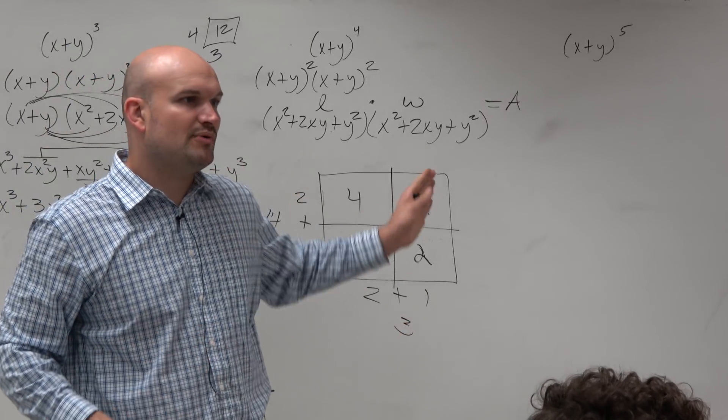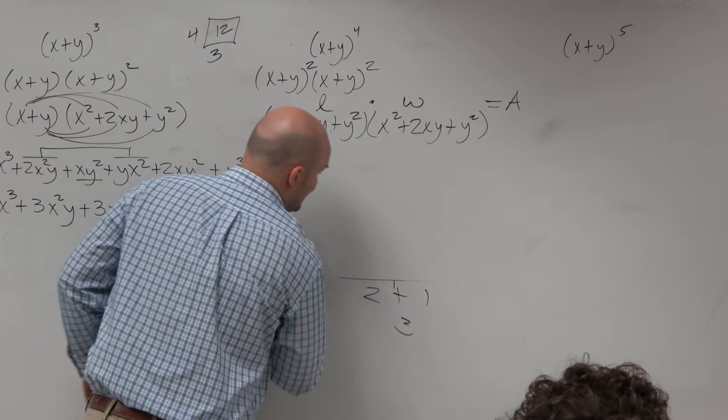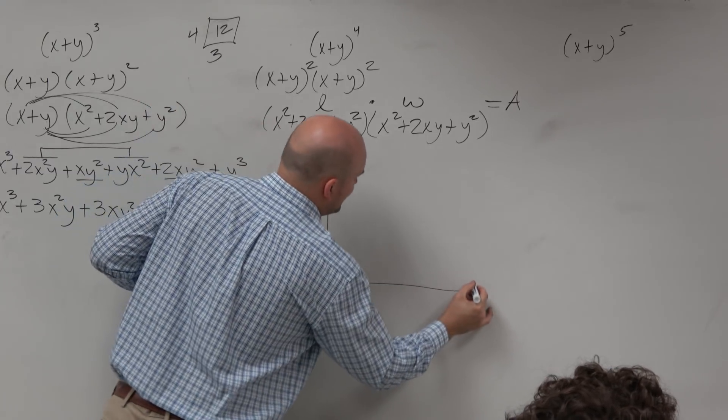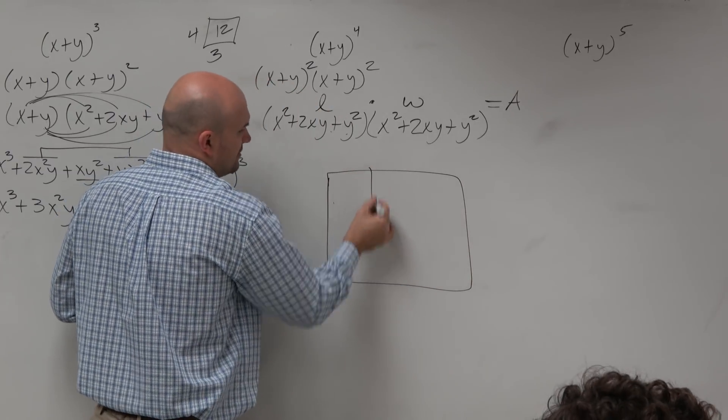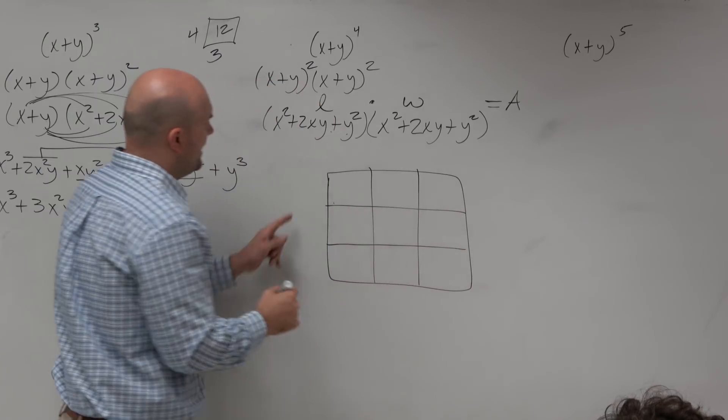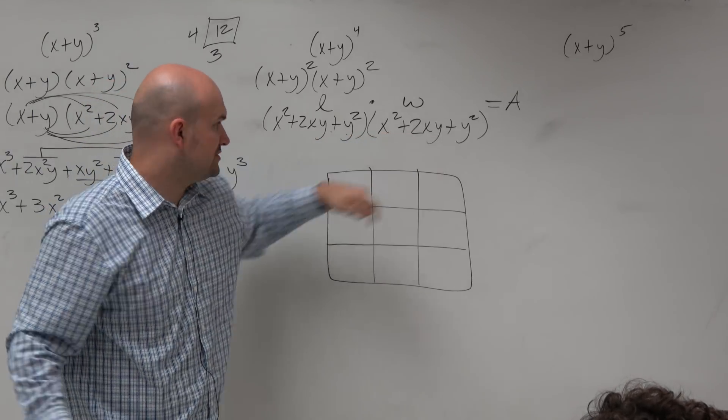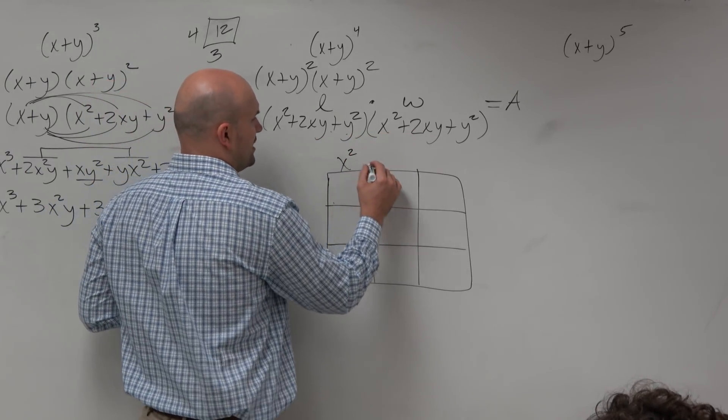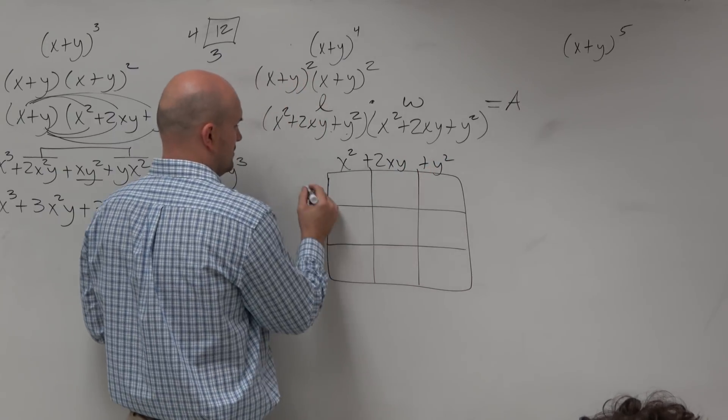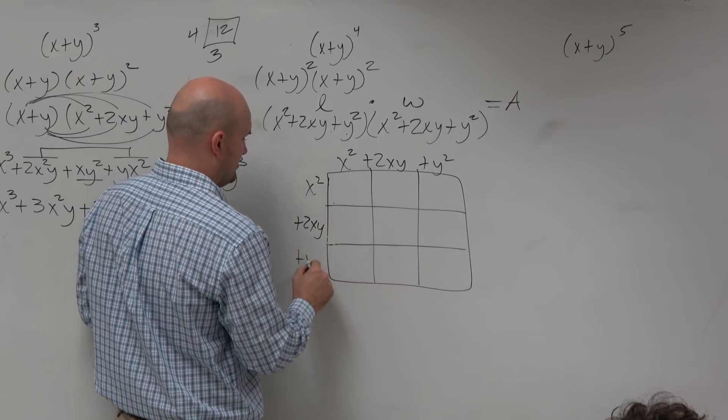So what that means is you can break it up doing rows and columns. So what I like to do, however many terms I have, that's how I'm going to segment my rectangle. In this case, it's a square. And then for each column, I'm going to use a term. For each row, I'm going to use a term. So x squared plus 2xy plus y squared, x squared plus 2xy plus y squared.